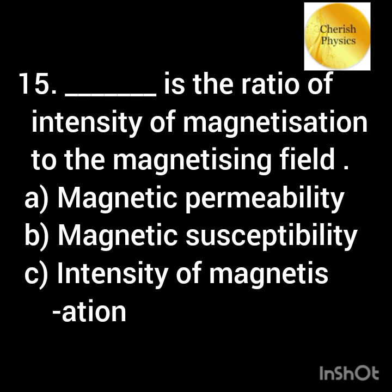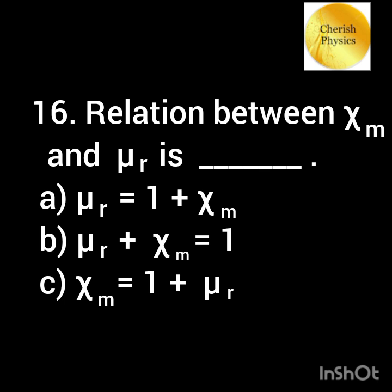The ratio of intensity of magnetization to the magnetizing field is — the relation between chi m and mu r is —